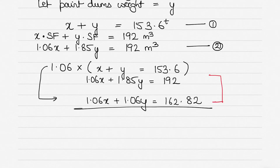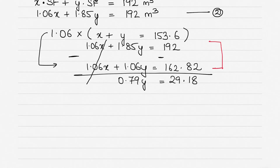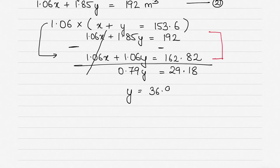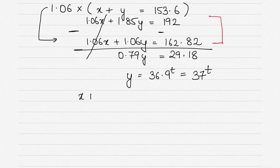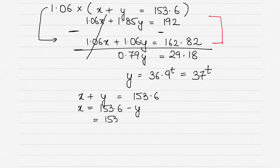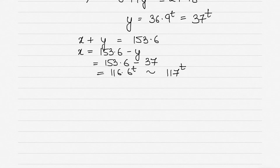Subtracting the modified equation one from equation two, the 1.06x terms cancel, leaving: 0.79y = 29.18, so y = 36.9 tons, rounded to 37 tons. Then x = 153.6 − 37 = 116.6 tons, which can be rounded to 117 tons. These are the weights of steel pipes and paint drums that can be loaded.